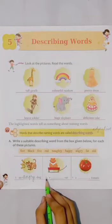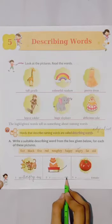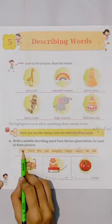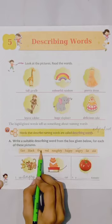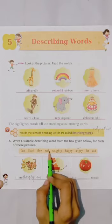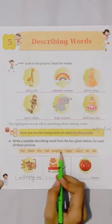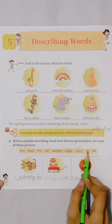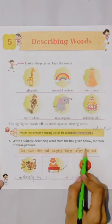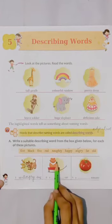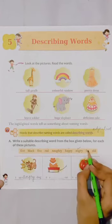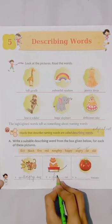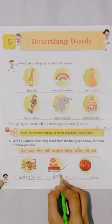Then come to the second part. A dash cat. Fast? No. Black? No. Five? No. Red? No. Naughty? No. Happy? No. Fat? Yes! The cat is fat. What is the cat? Mooti hai. Let's write: F-A-T, fat.